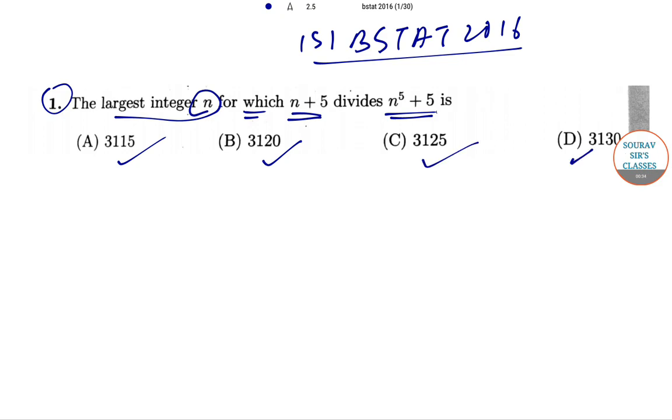What we have been given is that n+5 divides n^5+5. This implies that n+5 divides n^5+5n^4.